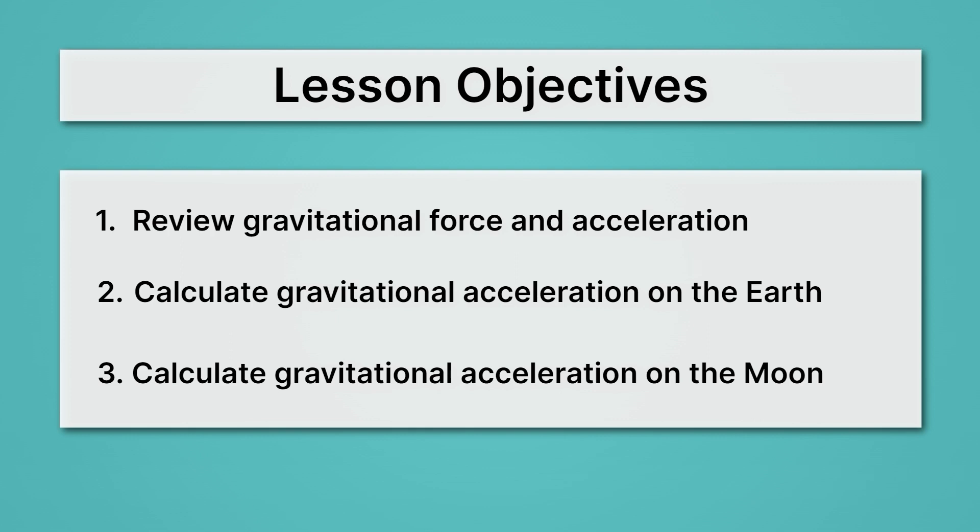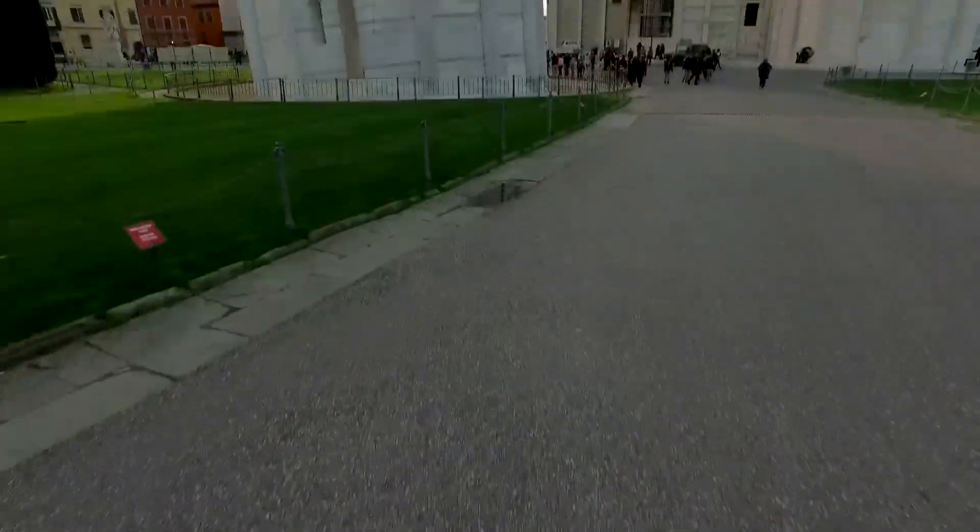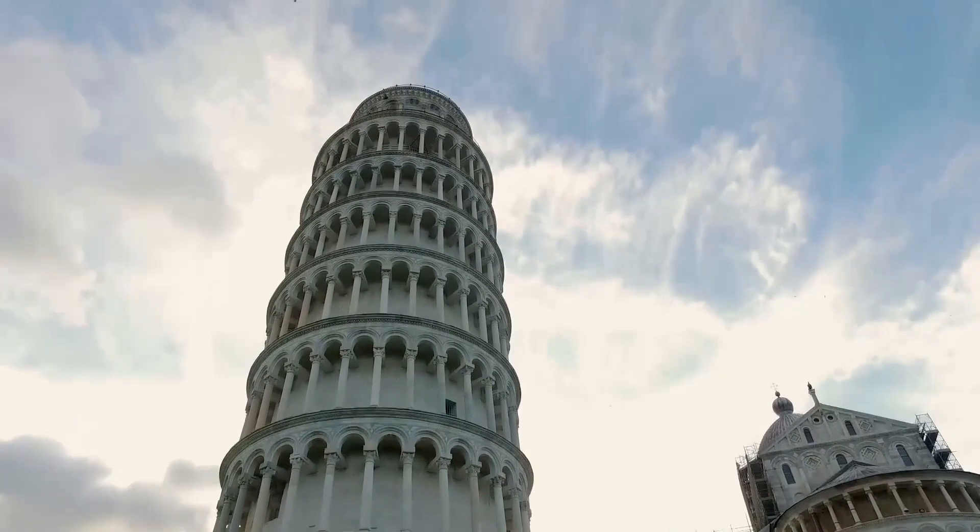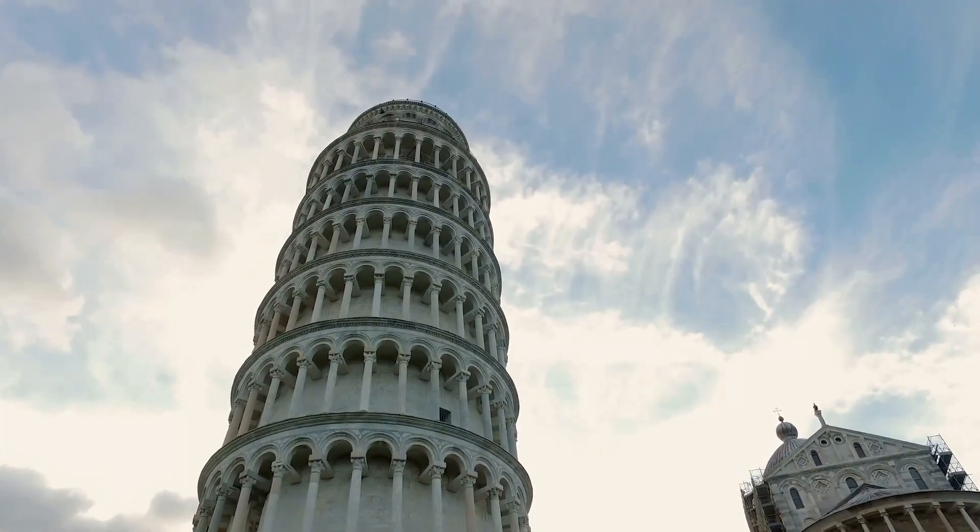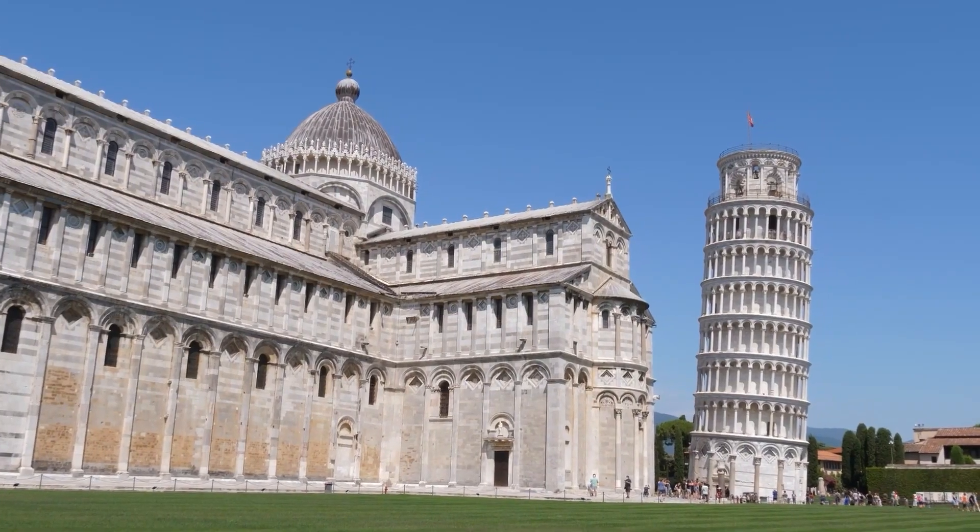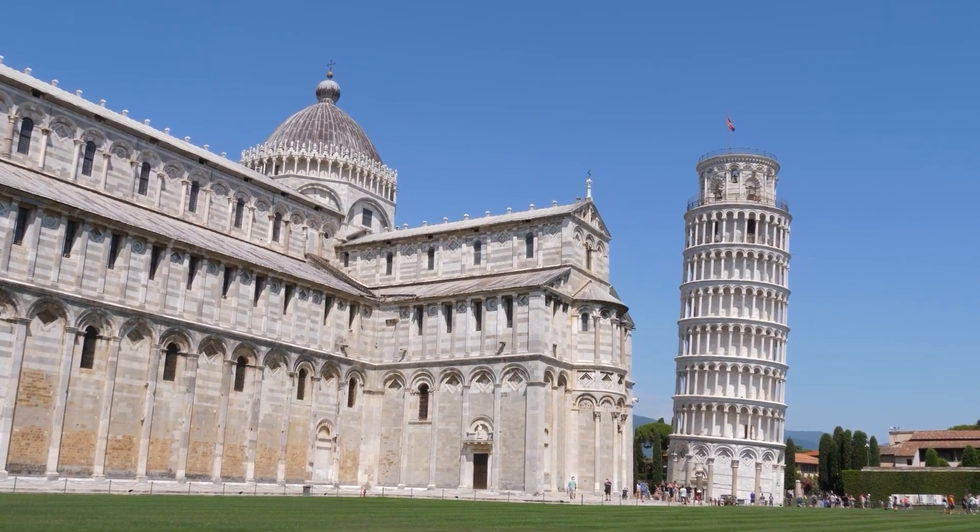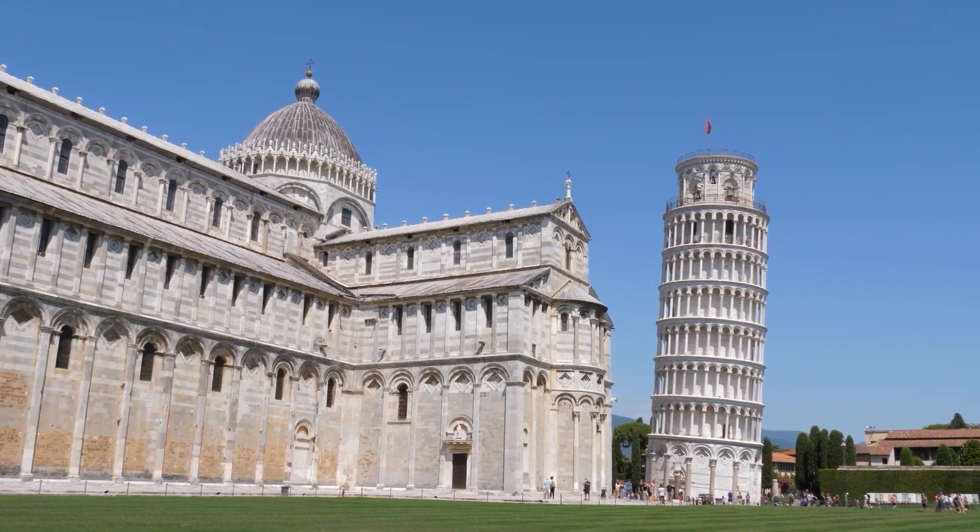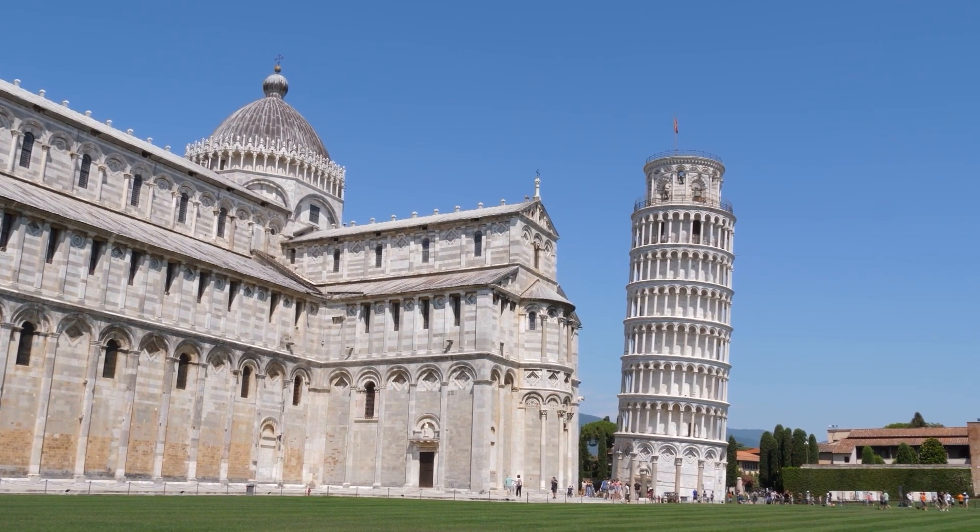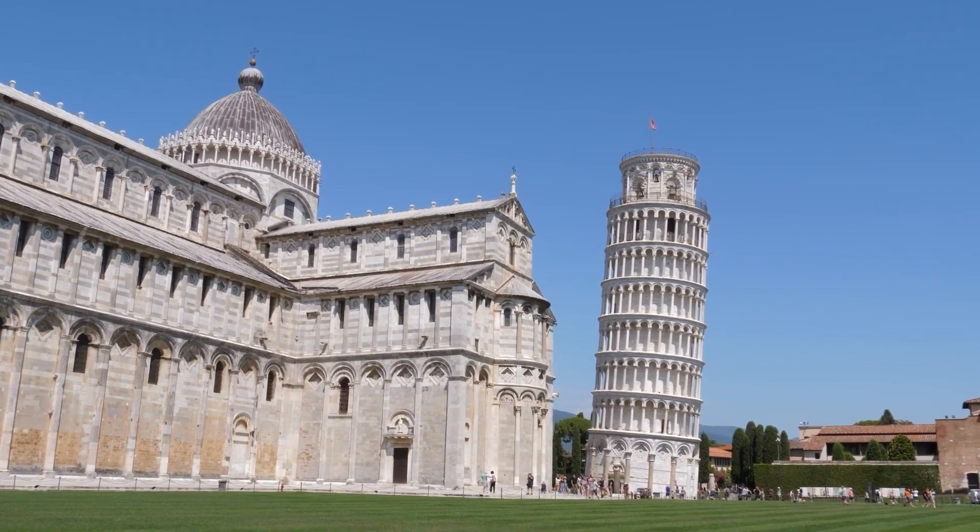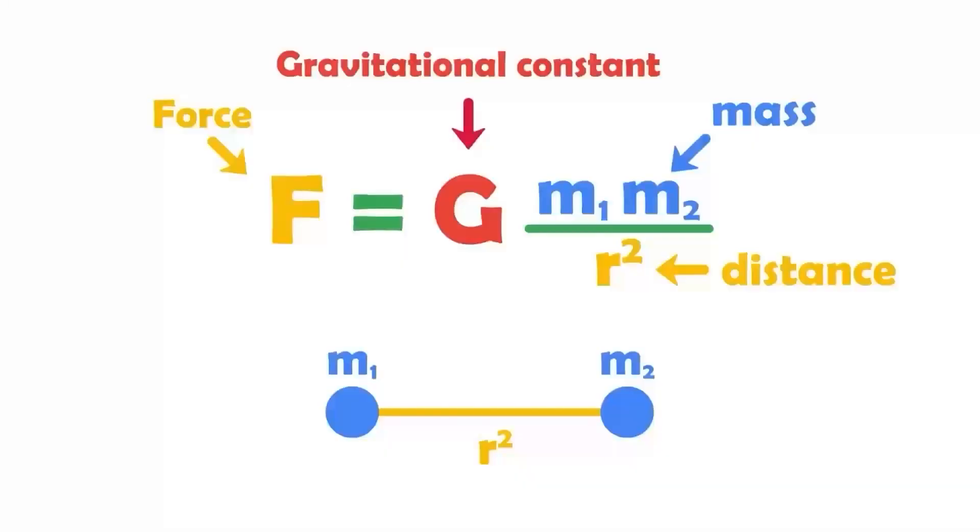So first up, doesn't gravitational acceleration not depend on mass? In the late 1500s, the Italian scientist Galileo is said to have completed an important experiment with gravity. We are told that he dropped two different objects of different masses from this famous Leaning Tower of Pisa. To everyone's surprise, they fell at the exact same rate, despite the fact that they had different mass.